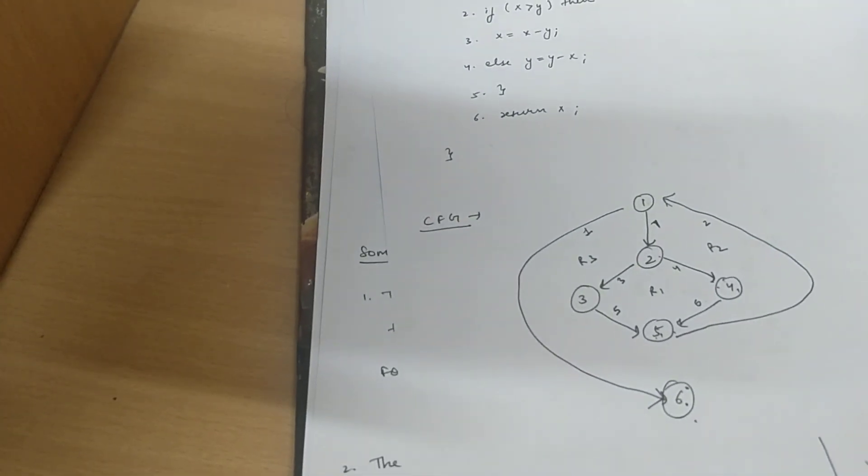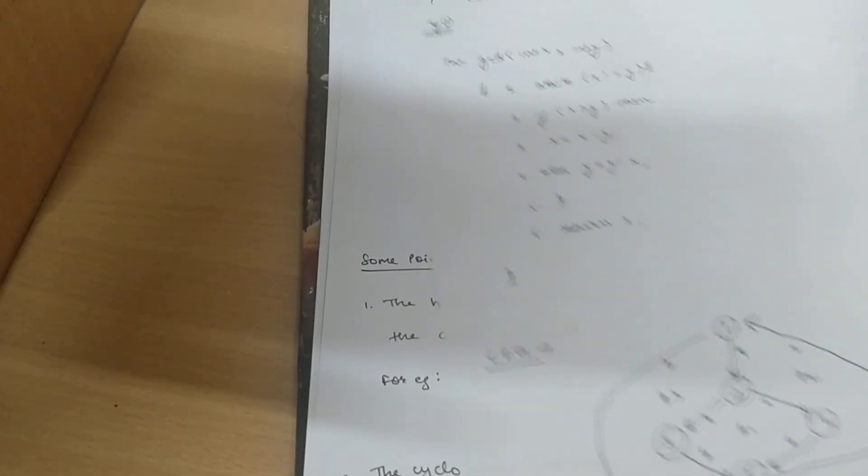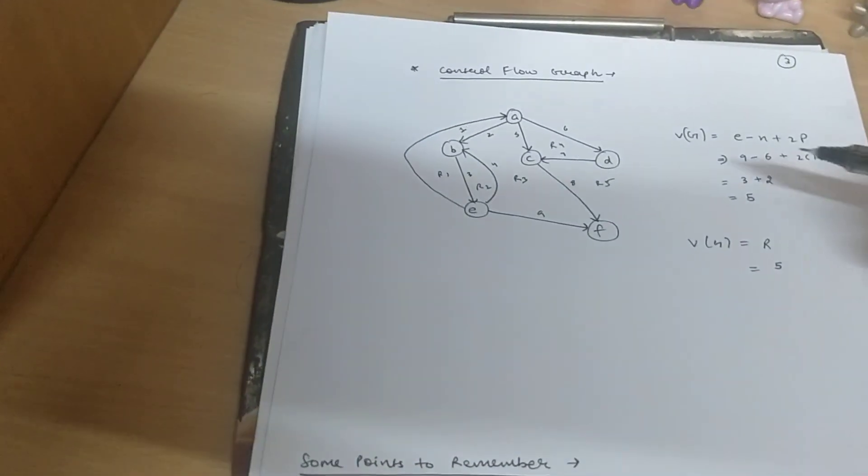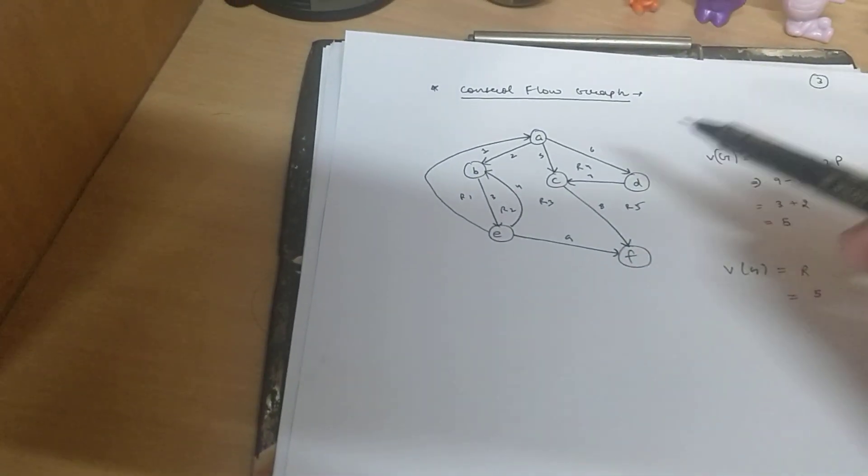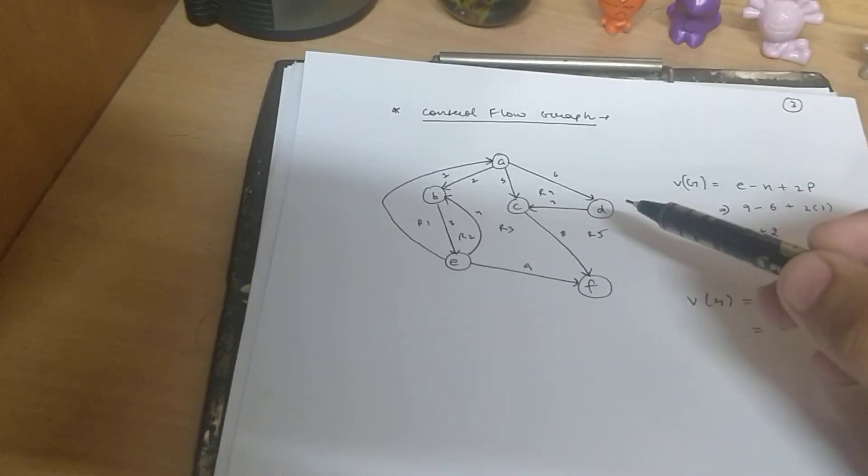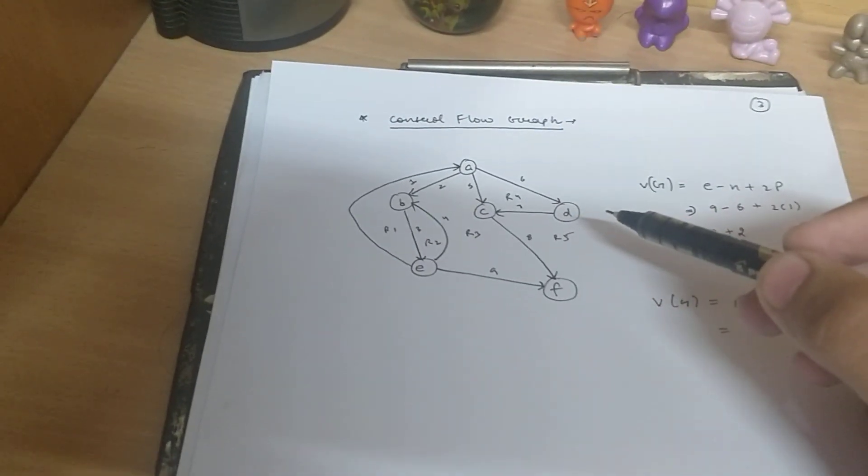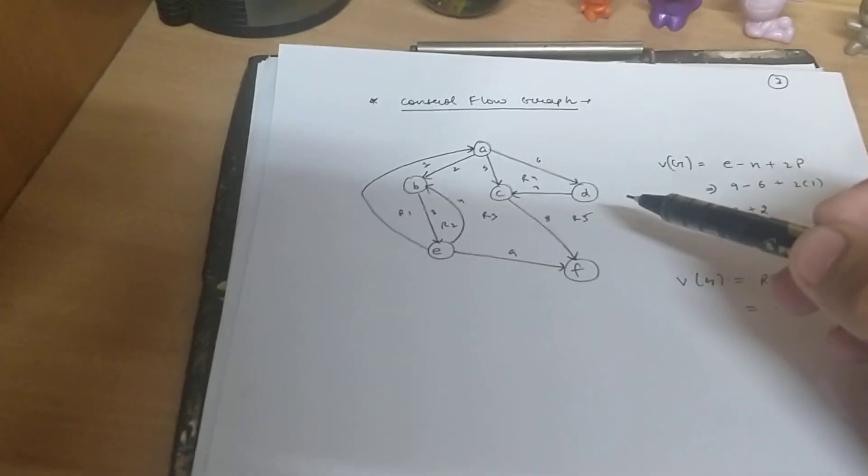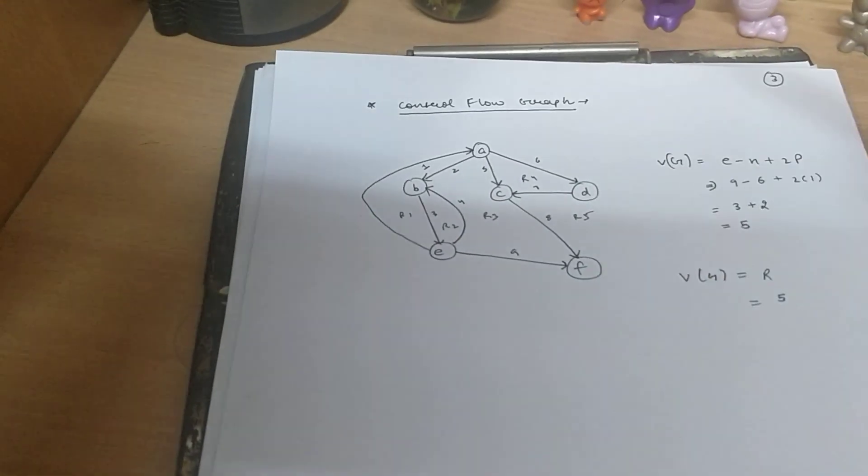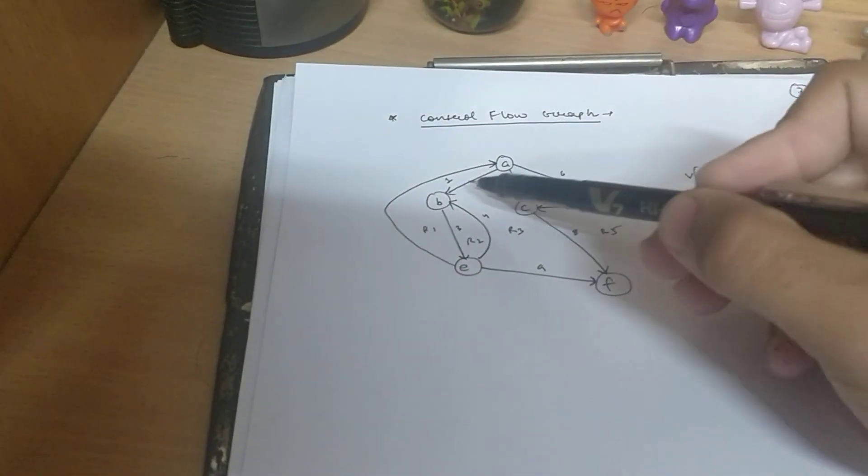Now let us have a look at the second example. This is also a control flow graph given. By the same formula we can calculate the Cyclomatic complexity. Give it a try. Calculate the number of edges as: